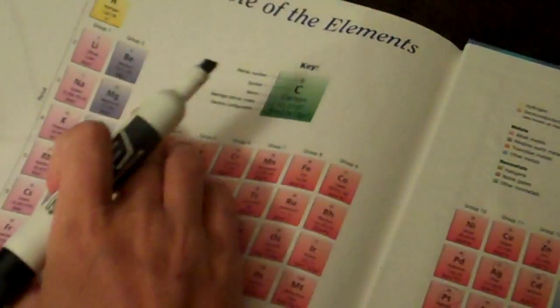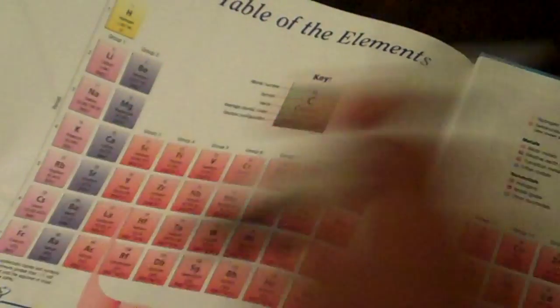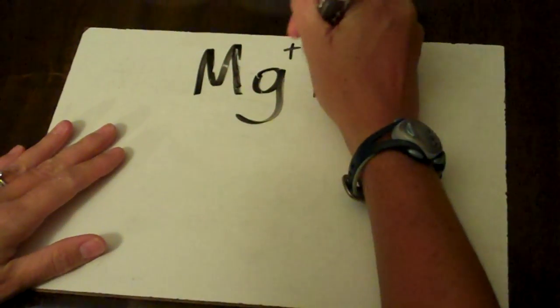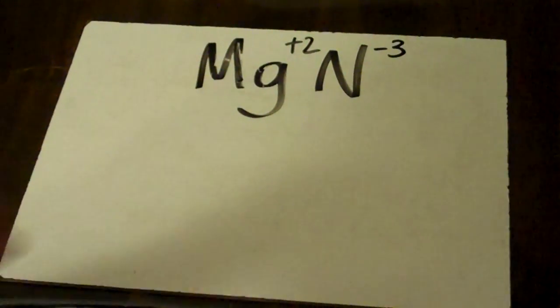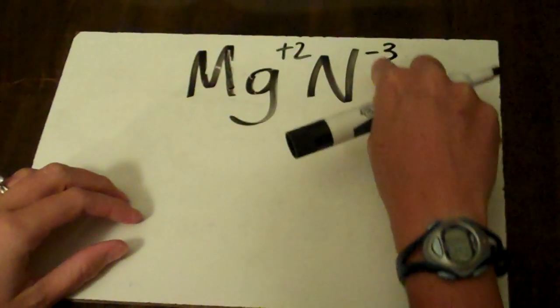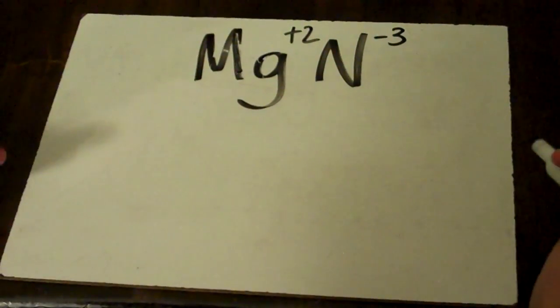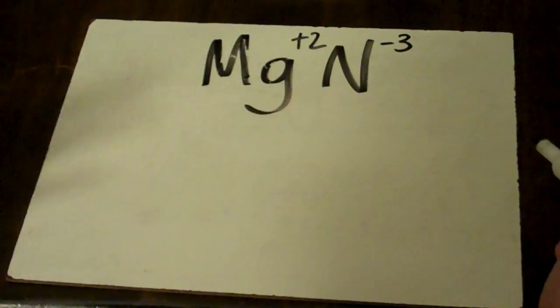As I said, we found magnesium, it's plus 2 and if we count back, nitrogen is minus 3. So to start out naming, first what you have to do is you have to write the charges down. So magnesium is plus 2 and nitrogen is minus 3. Now, the name of the game here is balancing charges. So we want to make sure we write this such that the charges are balanced.